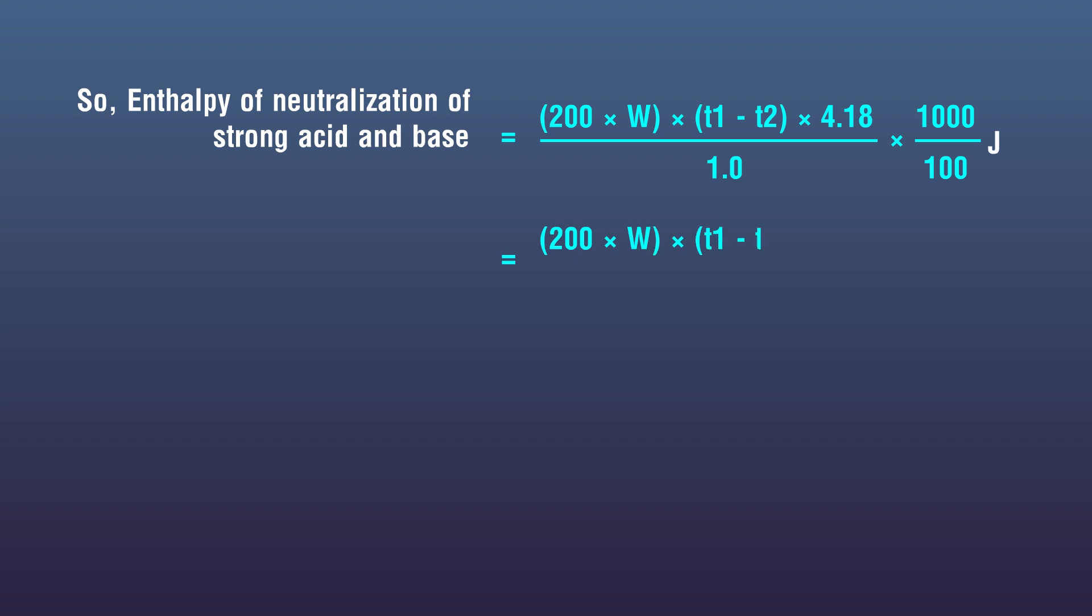This equals 200 multiplied by 29.1 multiplied by 28 minus 40 multiplied by 4.18, whole upon 1.0 multiplied by 100 kilojoules.